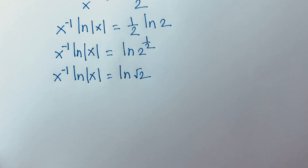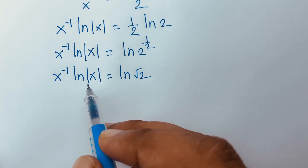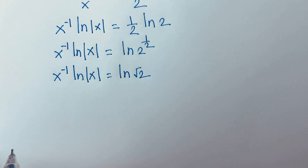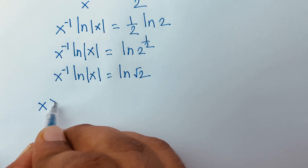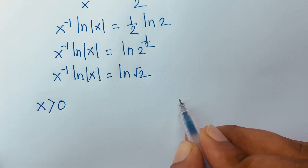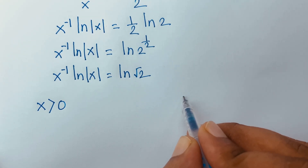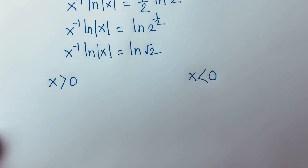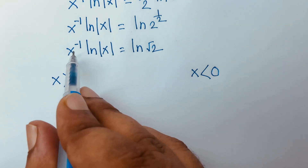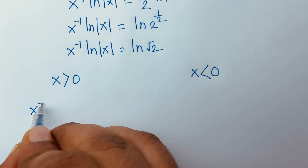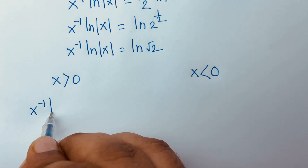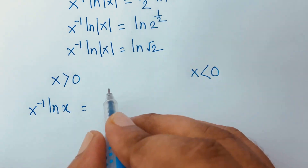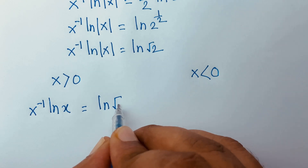Now, x can be positive or negative. First case: x greater than 0. Other case: x less than 0. For the first case, I can say x inverse times ln(x) is equal to ln(√2).